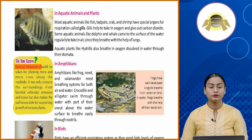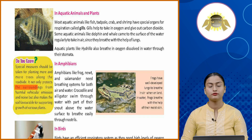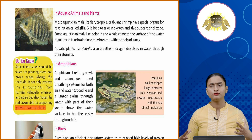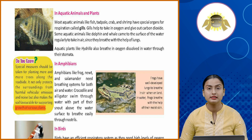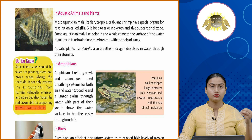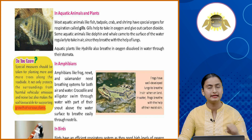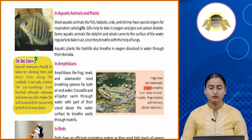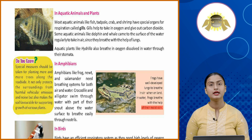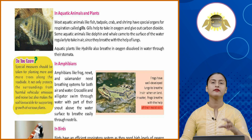Do you know? Special measures should be taken for planting more and more trees along the roadside. It not only protects the surroundings from harmful vehicular emissions and noise, but also makes the soil favorable for supporting growth of various plants. Planting more trees helps absorb more carbon dioxide, maintaining air quality and reducing global warming. Frogs have well-developed lungs to breathe on land and use their moist skin to breathe in water.